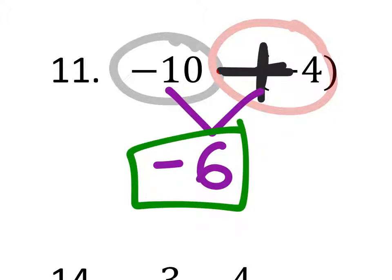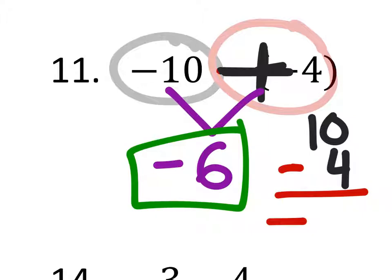Now again, we could have done that the same way that we did that last one where we had negative 10 and then 4. So we can subtract this knowing that we have more negatives and just make sure that answer is negative. Negative 6, it's the same thing.